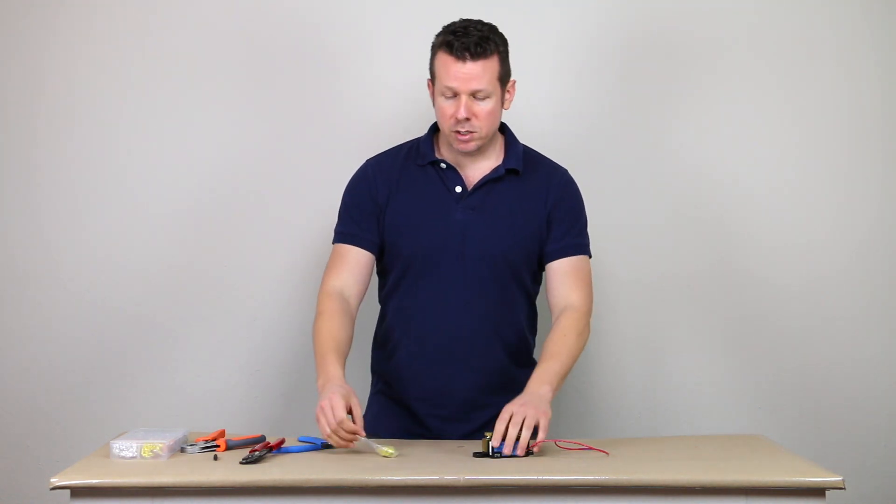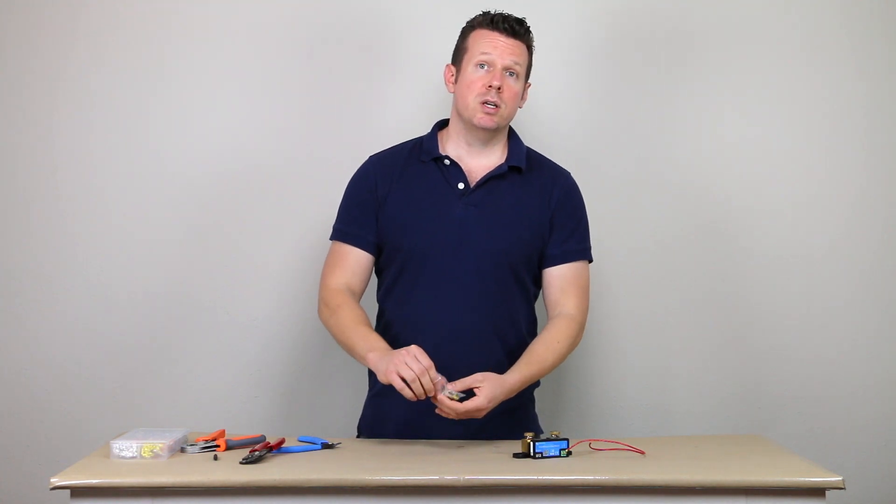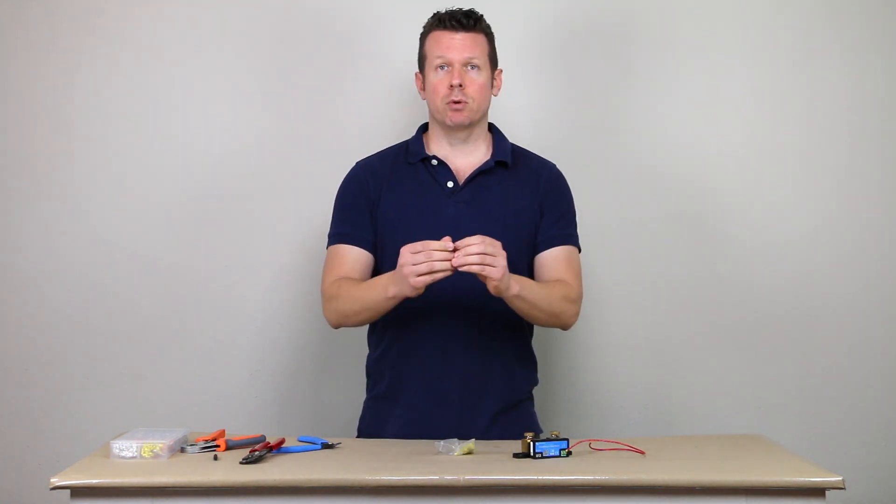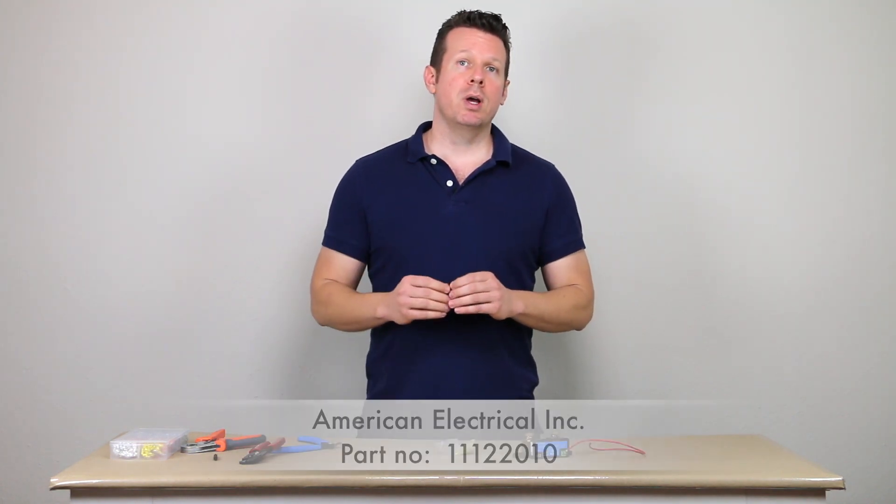So with that, let's talk about the specific part numbers that I recommend. Now these ferrules that I used in our demonstration, these are 18 gauge ferrules from Panduit. And I'll go ahead and put that part number down below. And the tube is a little bit longer.